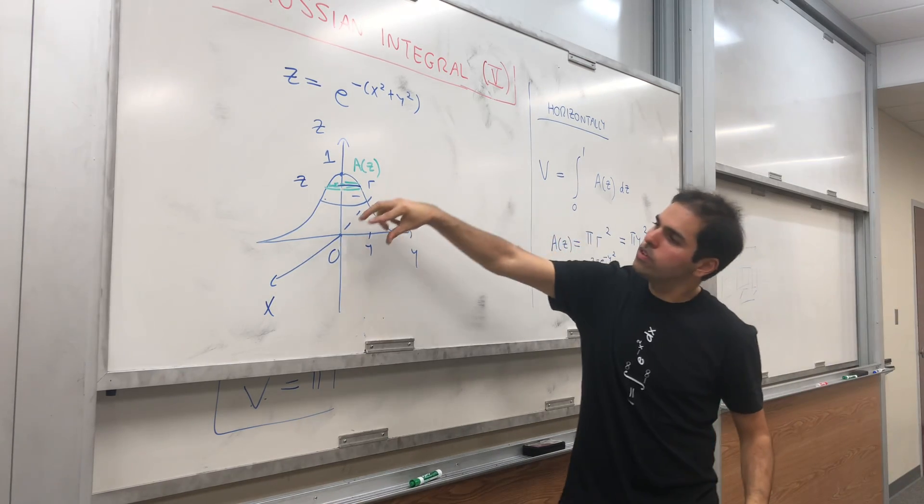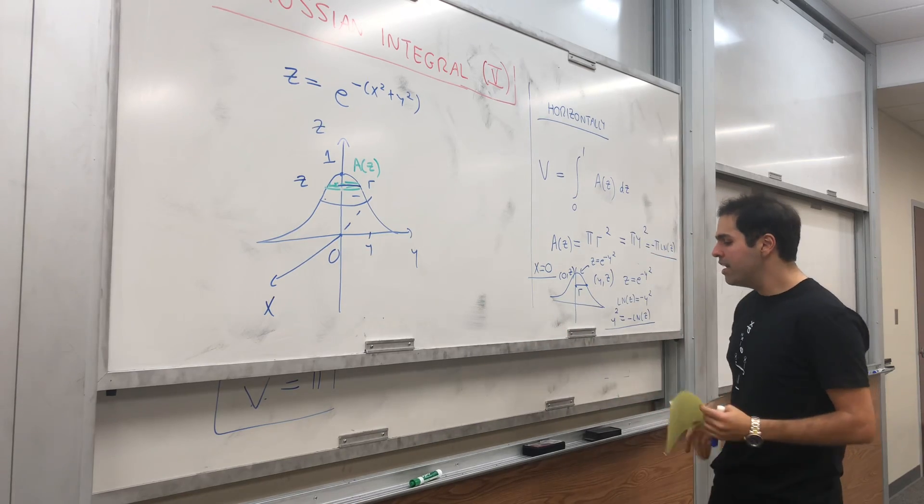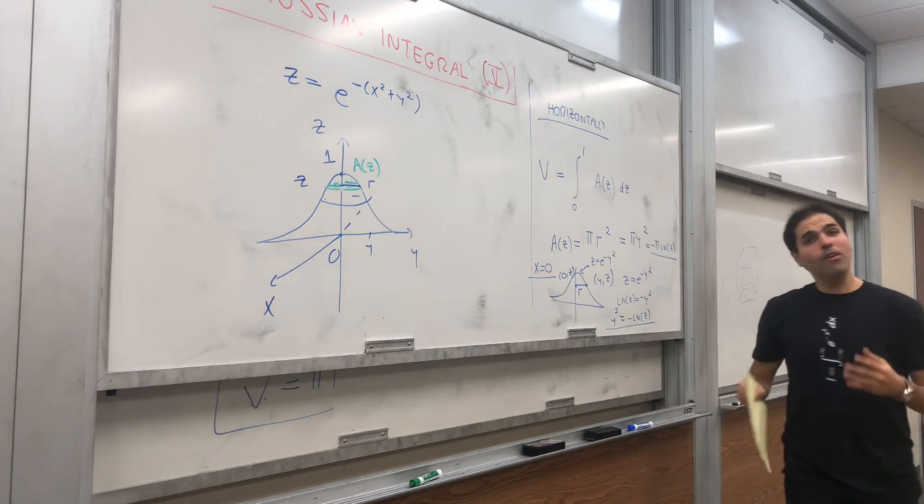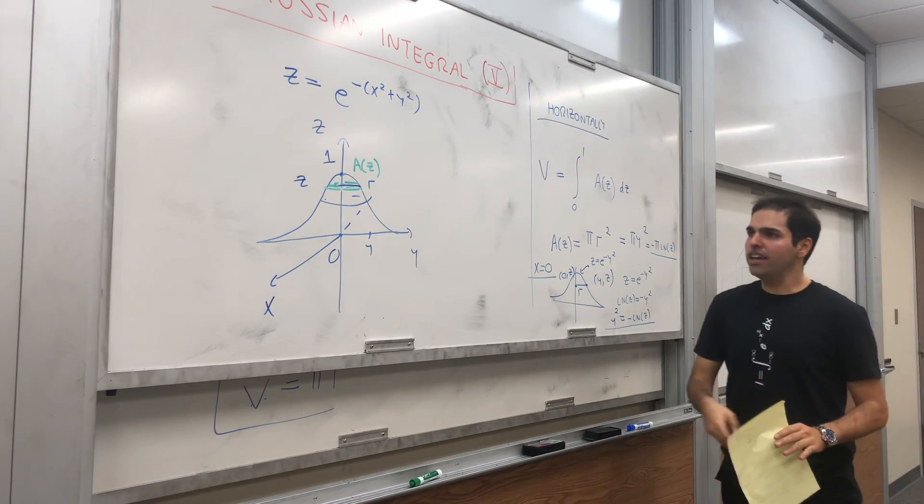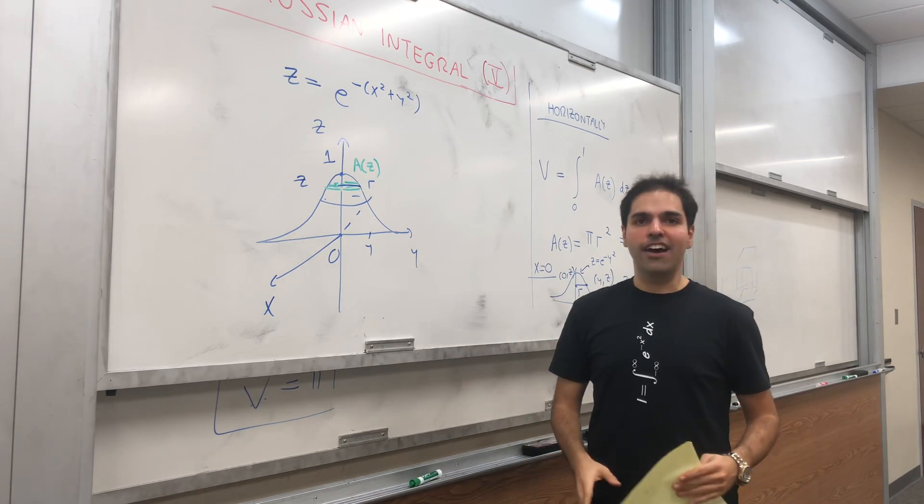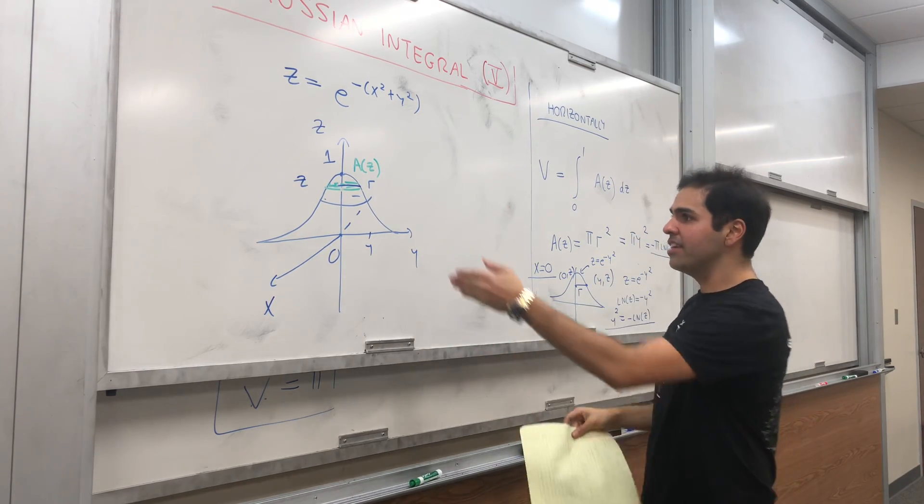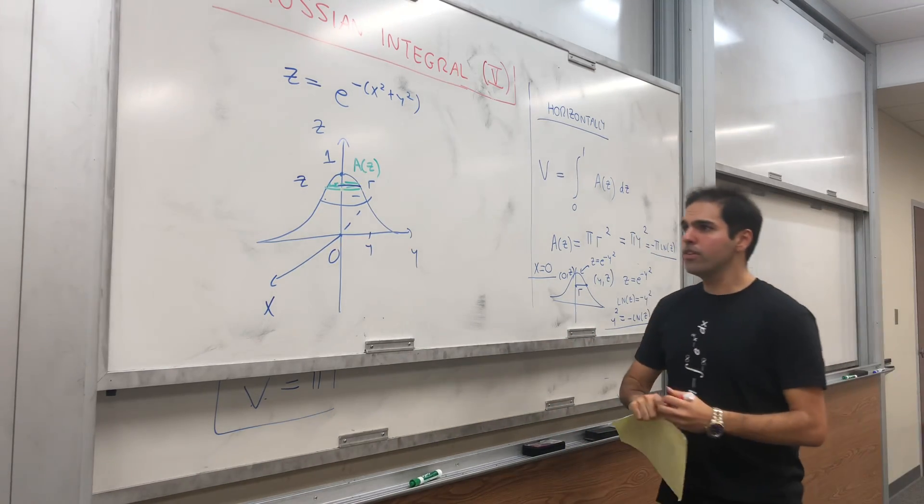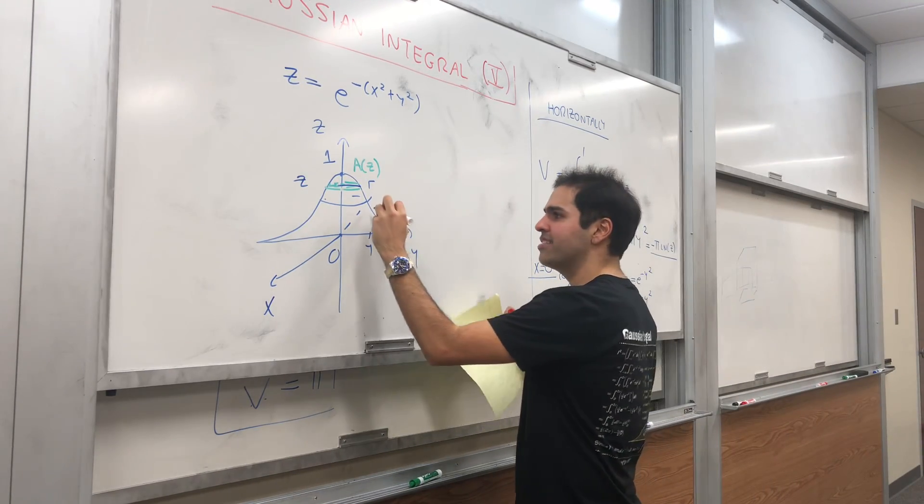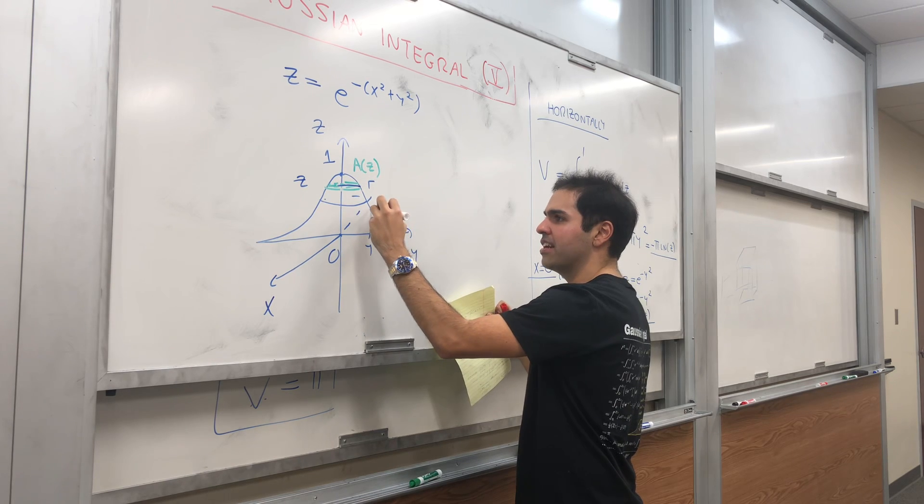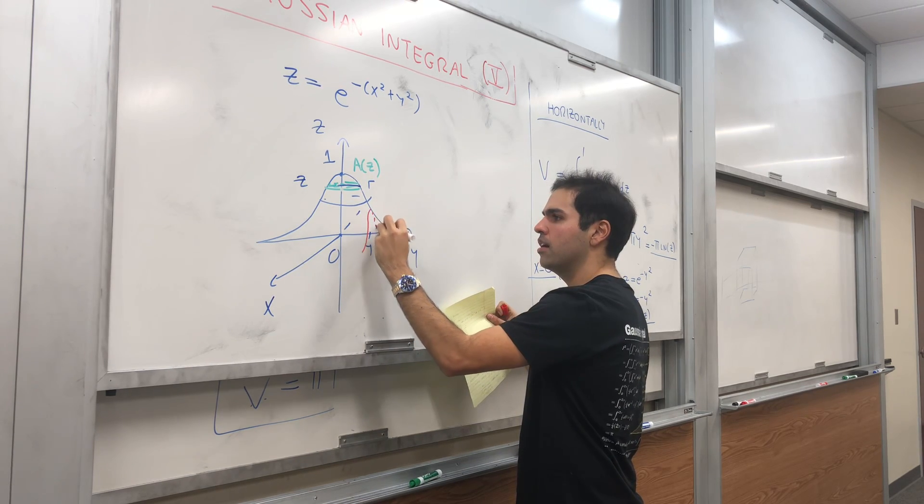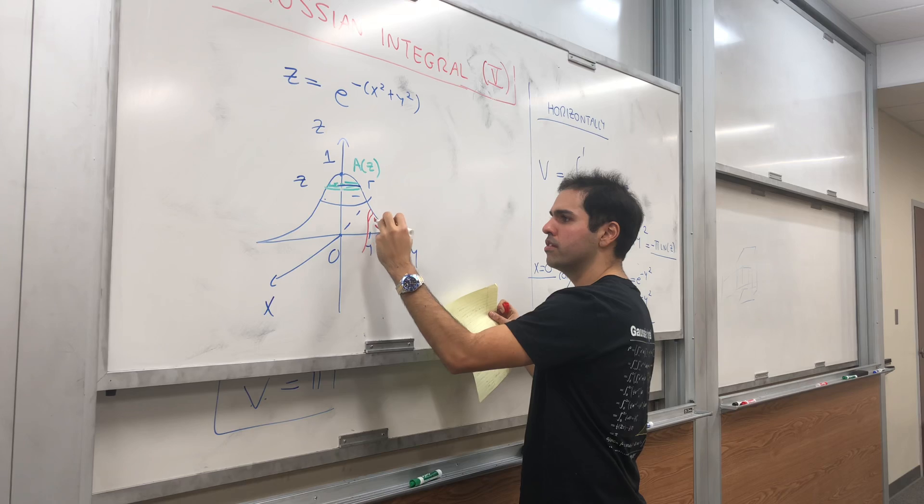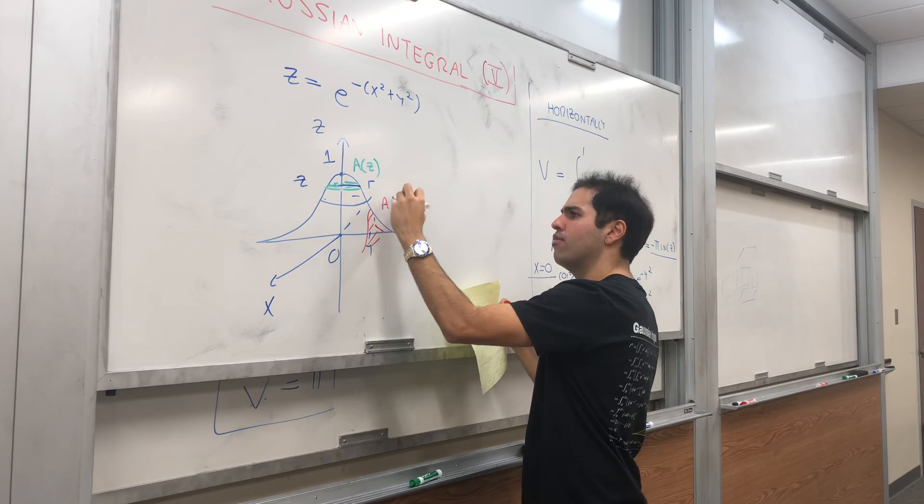The volume under this 3D bell-shaped curve is π. Now we would like to find another way of calculating this volume using vertical slices instead. If you slice this object vertically, you get other bell curves with area A(y).